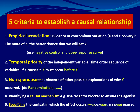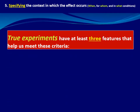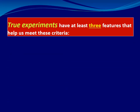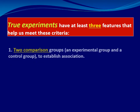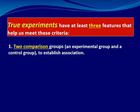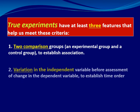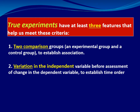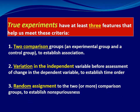These are the five criteria to establish causal relations. A true experiment has at least three features: first, two comparison groups — an experimental group and a control group (group with X and group without X); second, variation in the independent variable before assessment of change (the temporal relationship); third, random assignment to establish non-spuriousness.